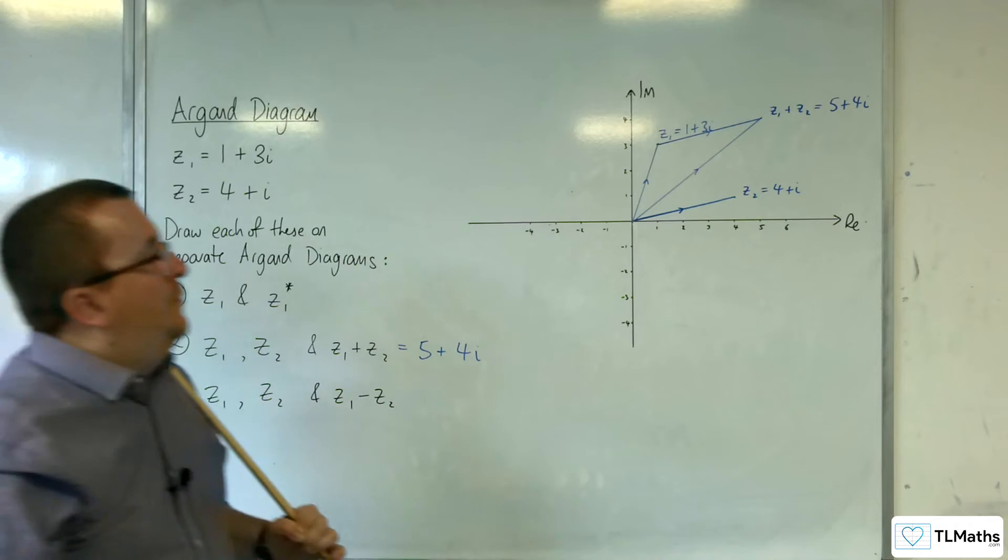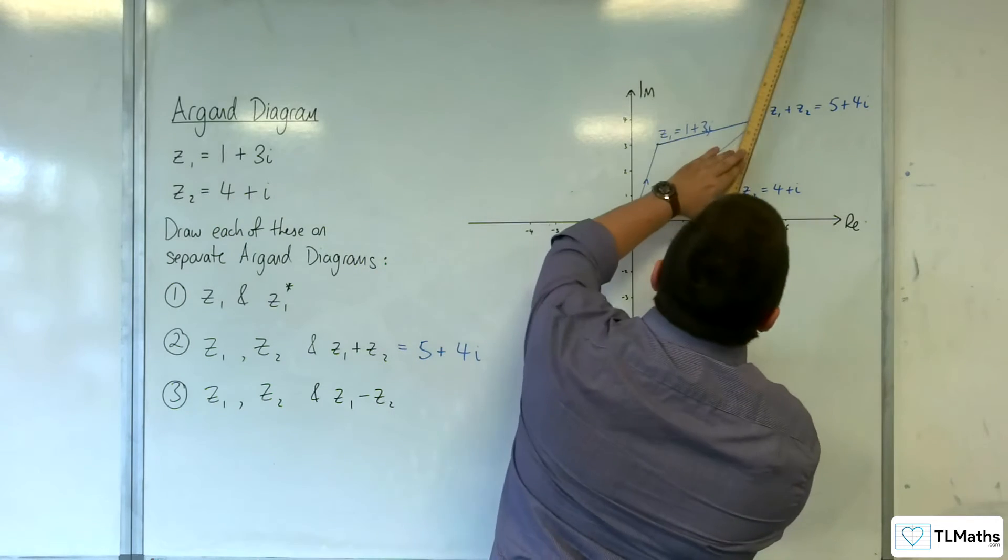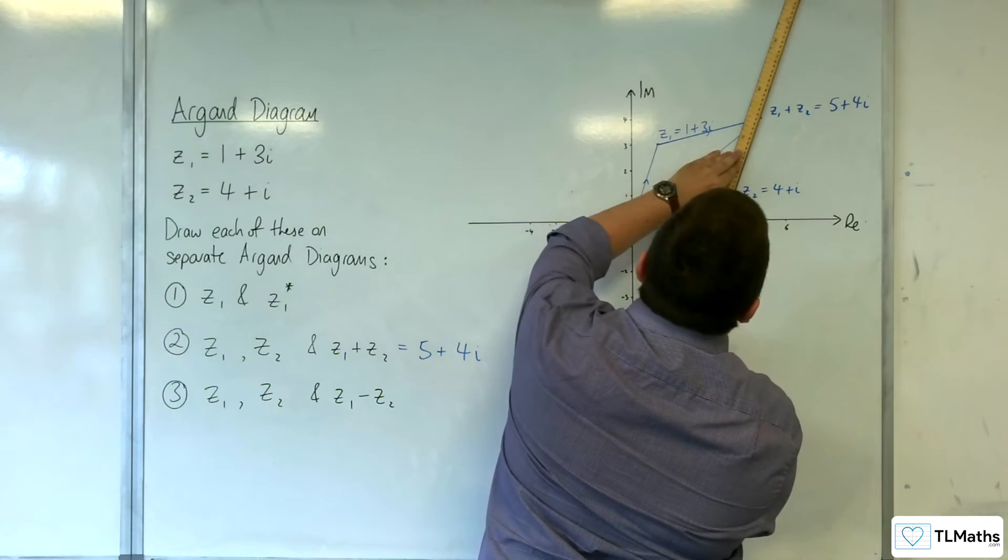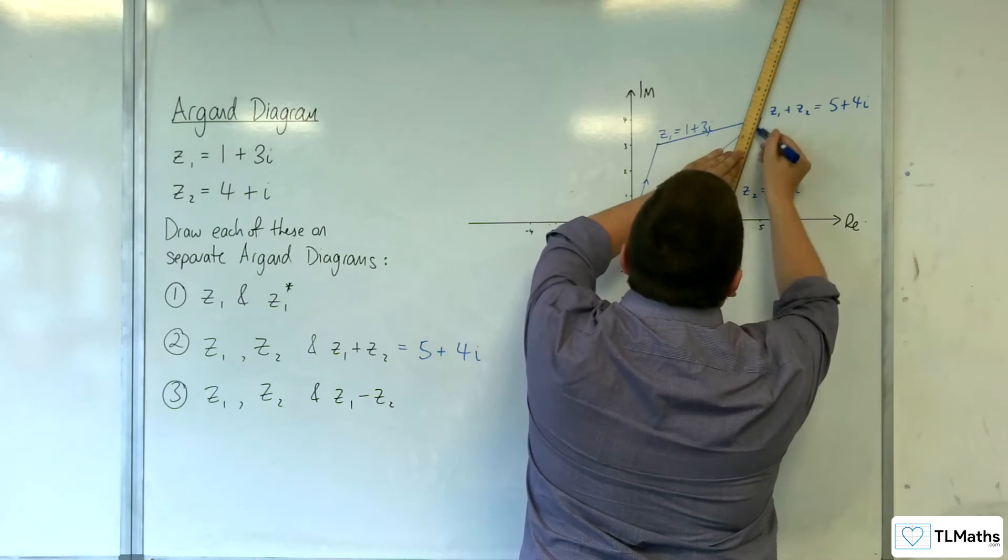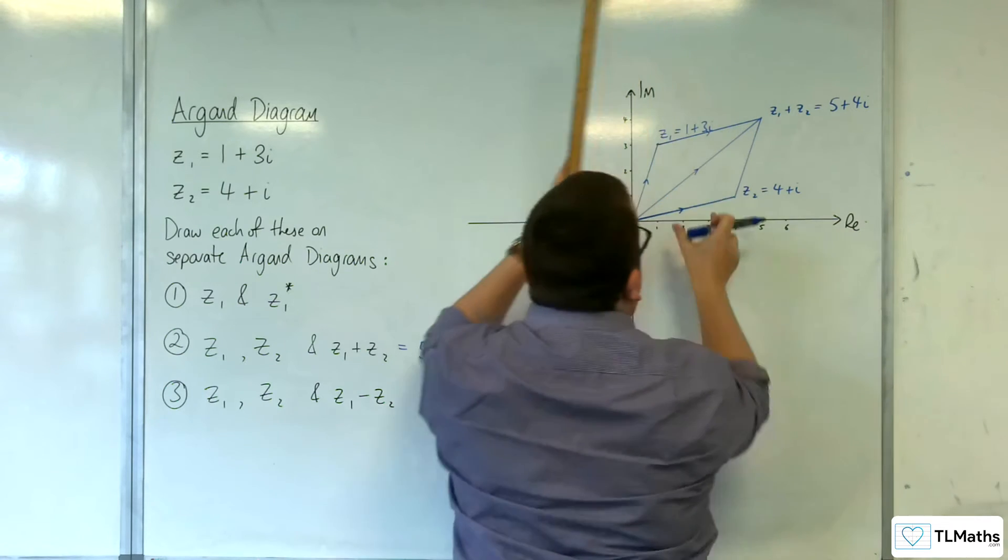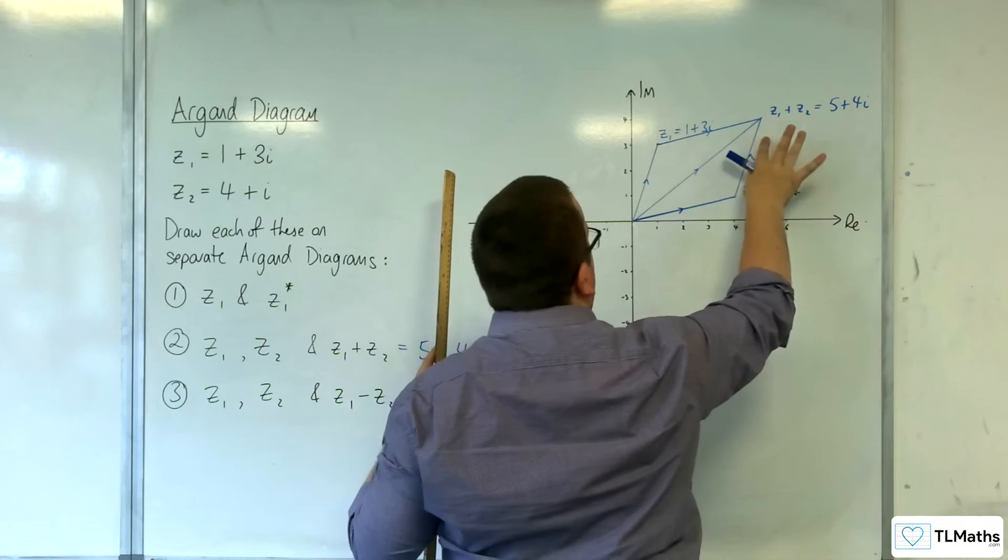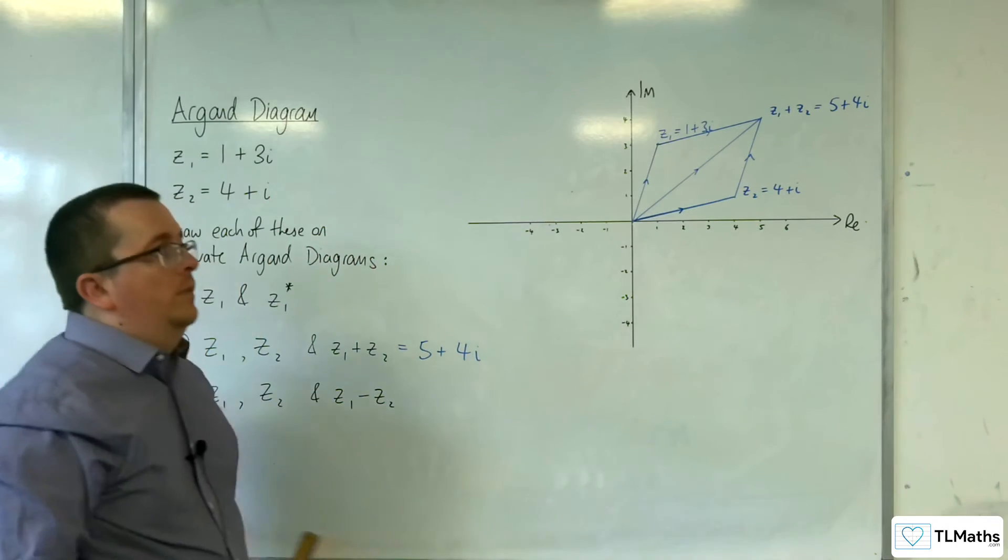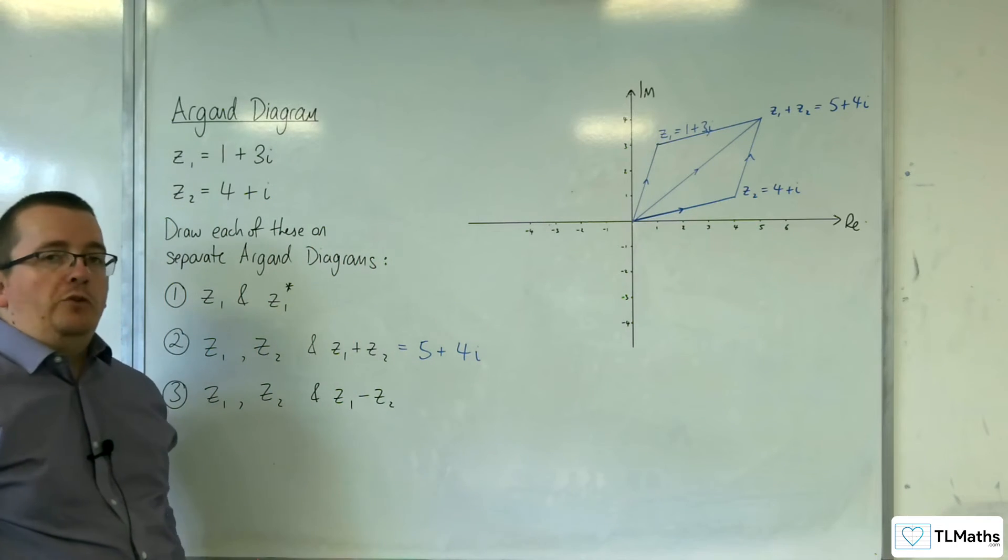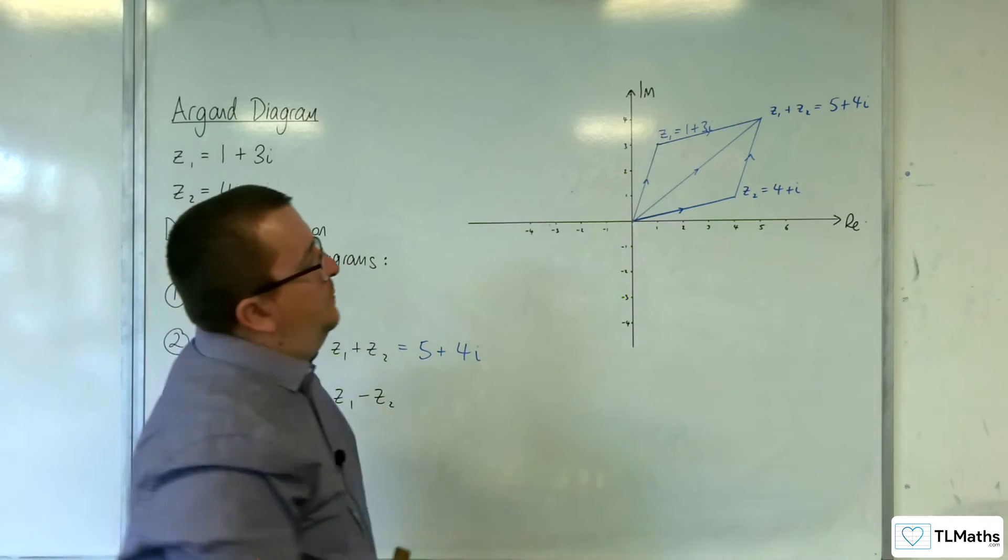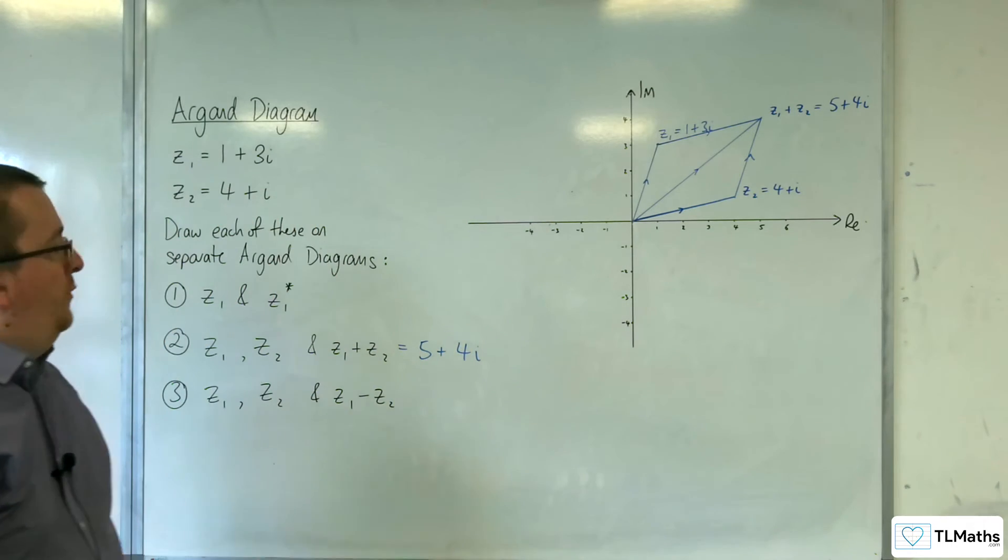Okay. So, you effectively get this parallelogram. If you want to visualize it like that. Because Z2 plus Z1 will get you to the desired result as well. So, together you form this parallelogram. Let's take a look at number 3.